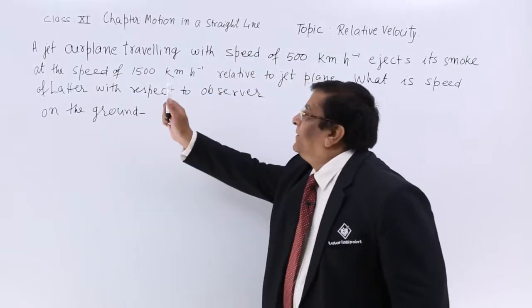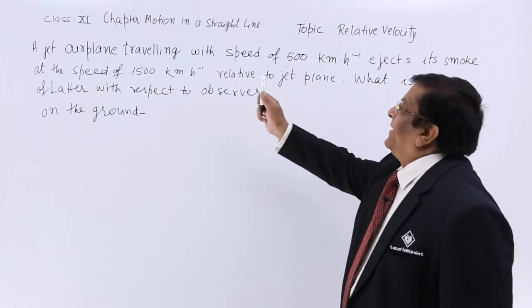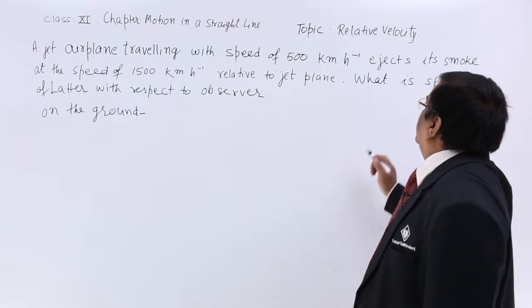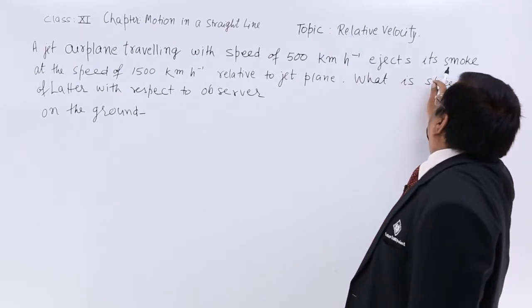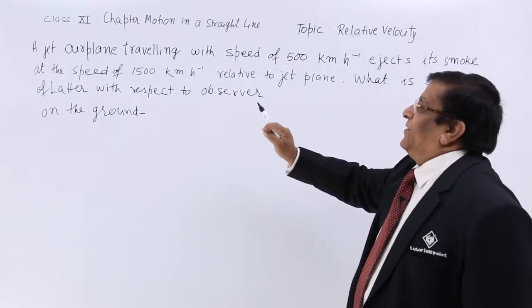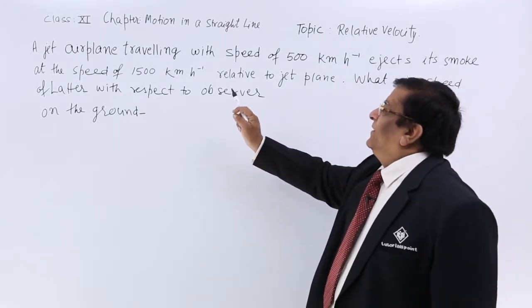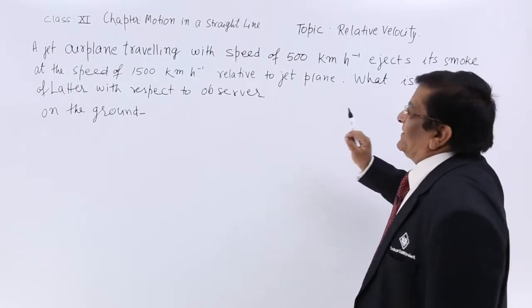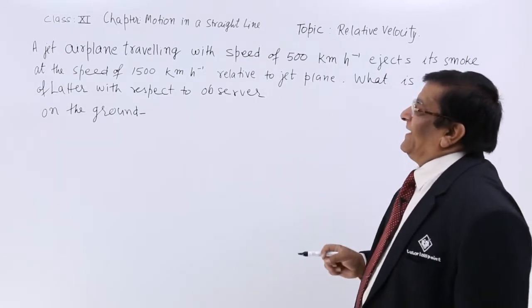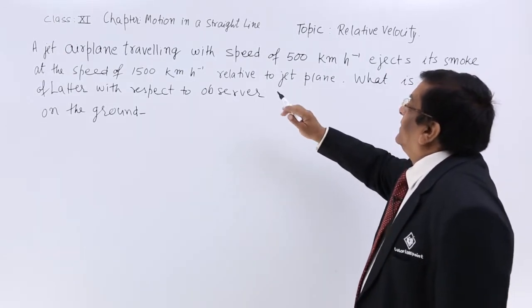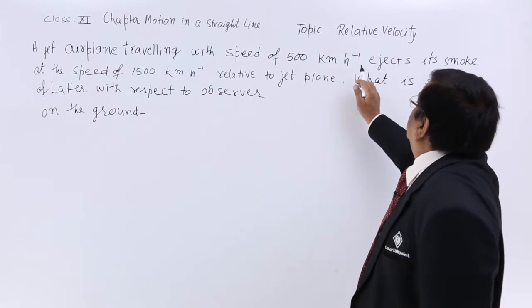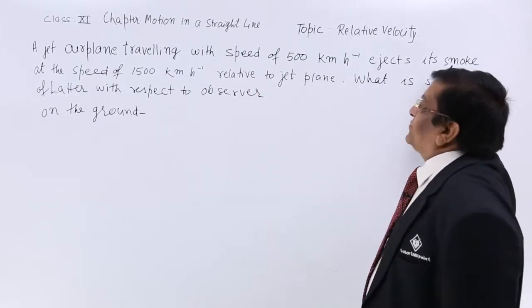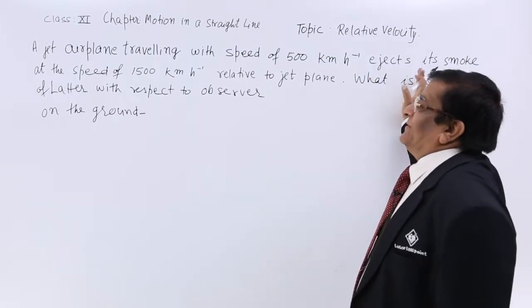See the question here: a jet airplane traveling with a speed of 500 kilometers per hour ejects its smoke at a speed of 1500 kilometers per hour relative to the jet plane. What is the speed of the latter? In this airplane and smoke, smoke is the latter.